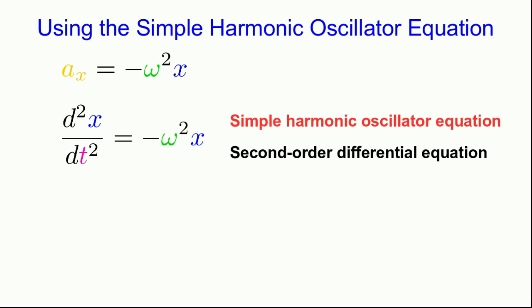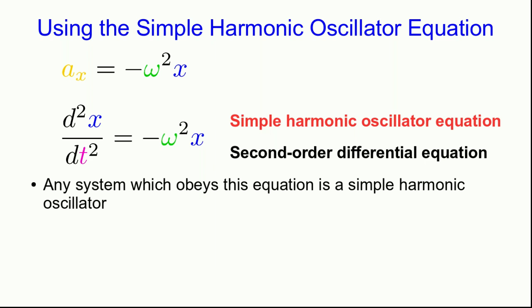In the last lecture we met this simple harmonic oscillator equation which is a second-order differential equation. Any system which obeys this equation is a simple harmonic oscillator, so if we can show that a system obeys this equation then we know it's a simple harmonic oscillator.